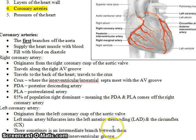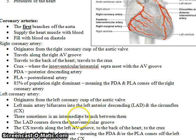The left coronary artery comes from the left coronary cusp of the aortic valve. It has a small segment called the left main, and then it bifurcates into the LAD — left anterior descending — and the circumflex. Sometimes there's an intermediate branch between them, in which case it is called the intermediate branch.